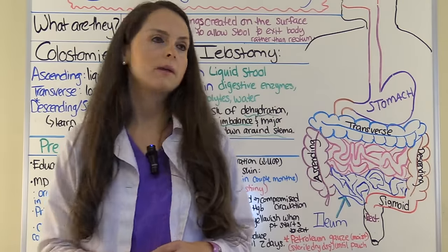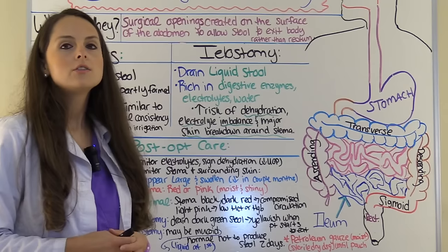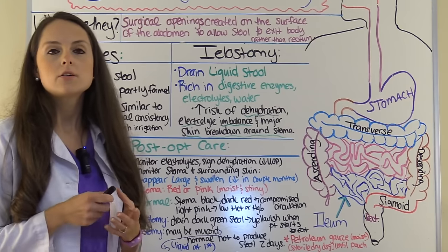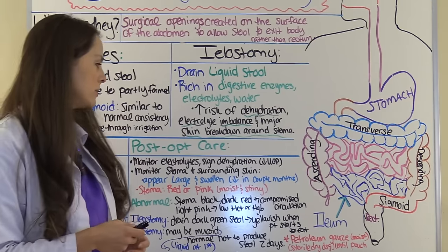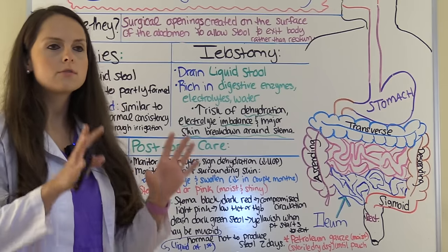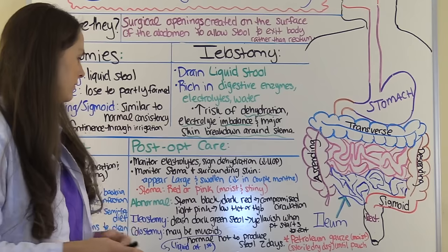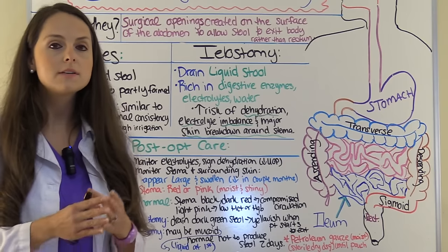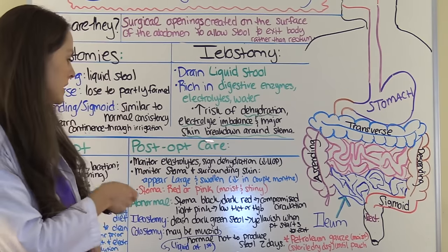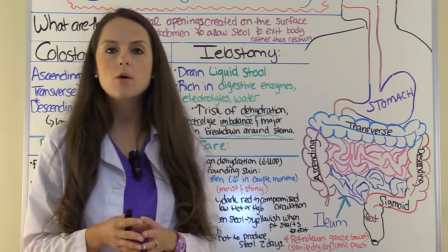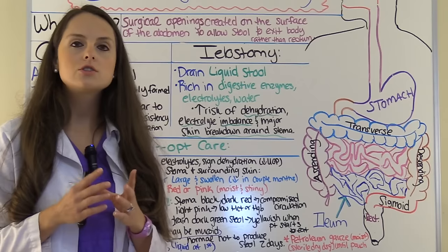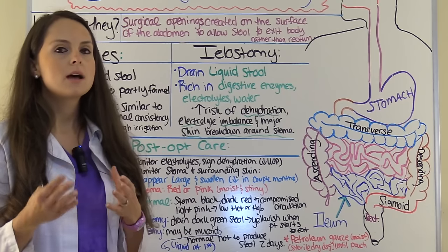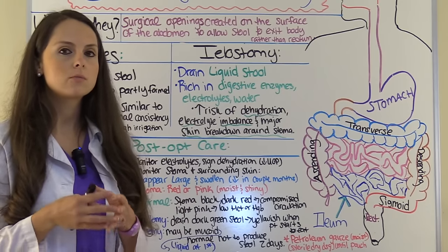Now let's look at post-op care. Your patient's back — they've had their ostomy placement. As the nurse, you're going to monitor their electrolytes and monitor them for signs of dehydration, looking at urinary output, making sure they're stable and tolerating everything. Also a big thing: you want to monitor that site, specifically the stoma. After surgery, the stoma is going to be large and swollen. Let the patient know that as months go by, the stoma will shrink down to normal size.